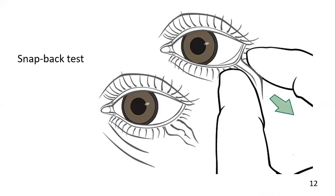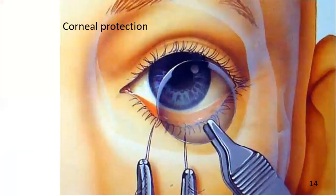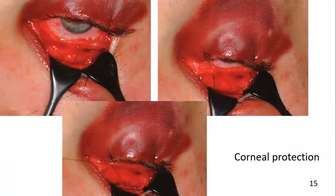A thorough evaluation is essential to choose the appropriate lower eyelid approach — that is a snap-back test to assess the laxity of the eyelid. The conjunctiva in the area of the lower fornix and the lateral canthotomy can be infiltrated with a small amount of local anesthetic containing a vasoconstrictive agent. Corneal protection is achieved with specialized shields, or at a later stage of the procedure with sutures connecting the canthotomy edge of the conjunctiva with the upper lid.